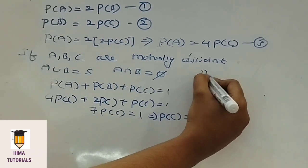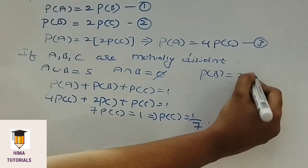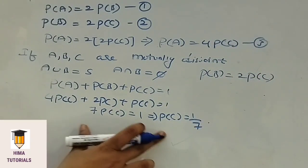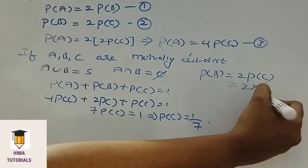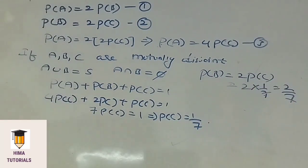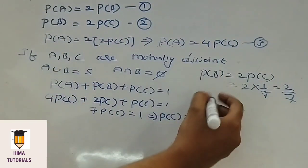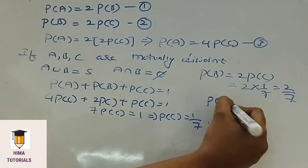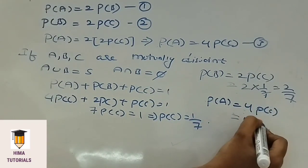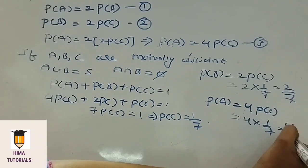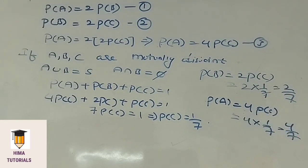Now, P of B equals 2 times P of C. The value of P of C is 1 by 7, so P of B equals 2 into 1 by 7, which is 2 by 7. And P of A equals 4 times P of C, that means 4 into 1 by 7 equals 4 by 7. So P of A is 4 by 7, P of B is 2 by 7, and P of C is 1 by 7. I hope it is clear. Please make a note of it.